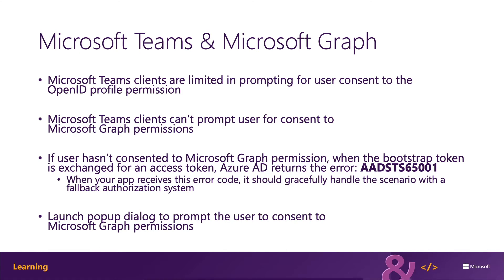Now let's look at the code and how you can implement a tab that uses SSO. First, you must associate the Azure AD app with the Microsoft Teams app. This is done in the manifest JSON file in the webApplicationInfo object. There are two parts that must be updated: the ID, which is the client ID for the registered Azure AD application, and the resource, which is the URL of the app — the same URI used when registering in Azure AD. The domain portion of the URL must also be listed in the validDomains array in the app's manifest.